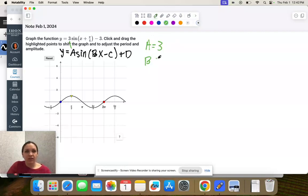b is the number by x, it's just 1 because it's just x. c is what comes after the minus sign, but there's no minus sign. So this one is negative π/4. Remember we take the opposite sign when it's a plus there. So c is actually negative π/4. And then d is the last number, it's negative 3.